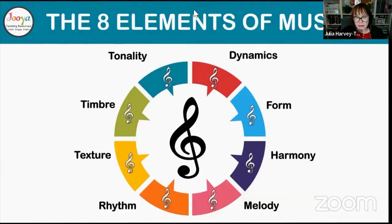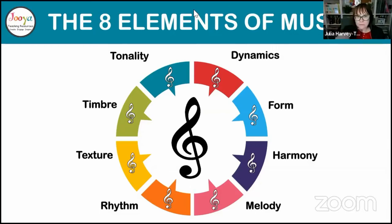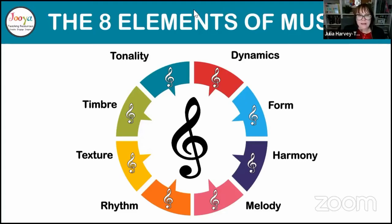The eight elements of music in alphabetical order: dynamics means how loud or soft; form or structure is the arrangement of the different parts of the music; harmony is about how the parts are arranged; melody is the main part of the music, usually the series of pitches that forms a tune; rhythm is the arrangement of long and short sounds; texture is the thickness and layers of sound; timbre refers to the instruments used and their unique sound quality; and tonality ties in with harmony — major, minor, all those sorts of things.